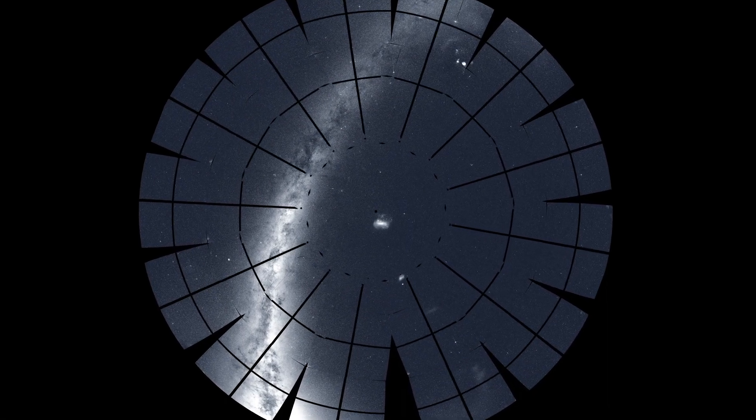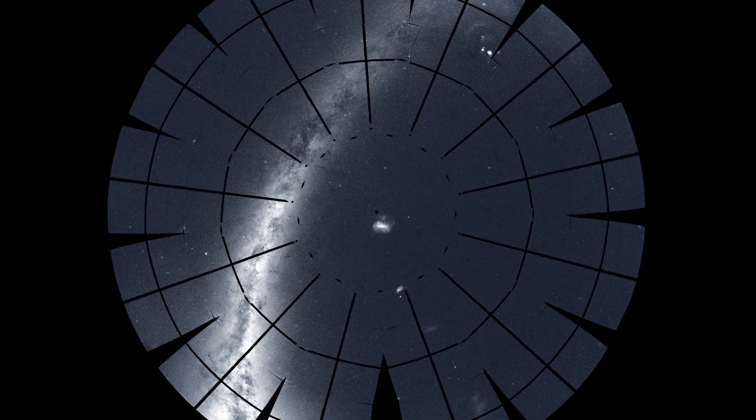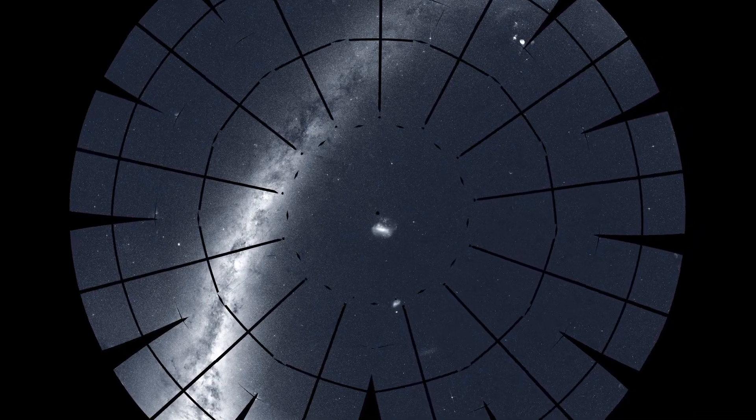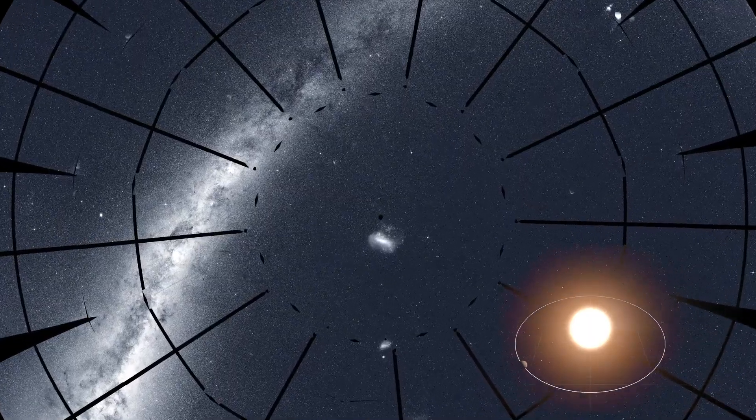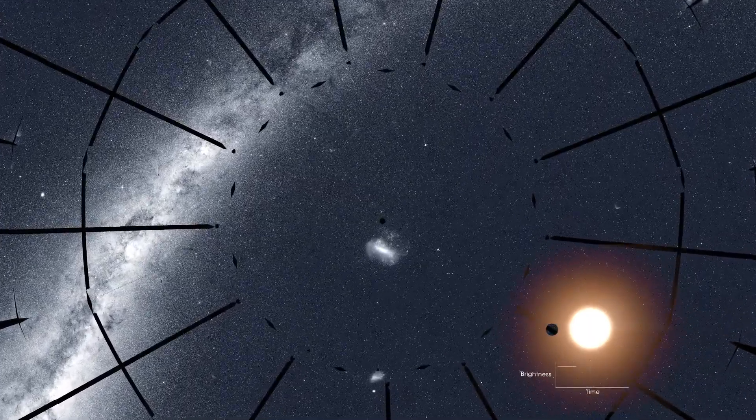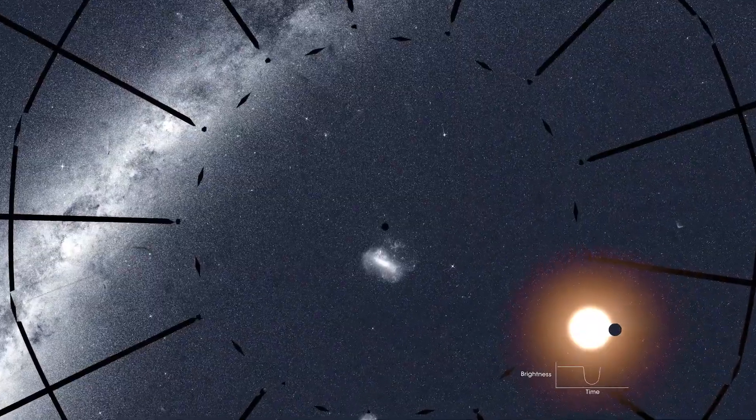TESS stares at patches of sky for long stretches, recording light from thousands of stars. Some of these stars have planets that cross or transit in front of them. TESS sees these events as tiny, regular dimmings of the host stars.